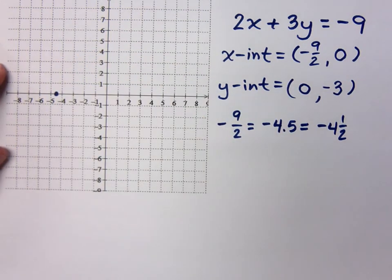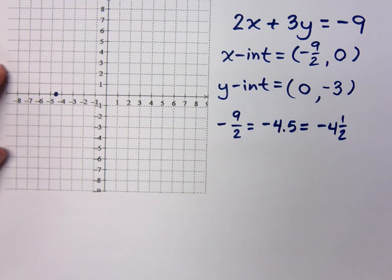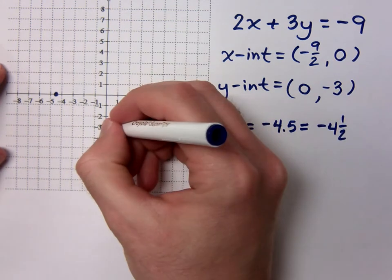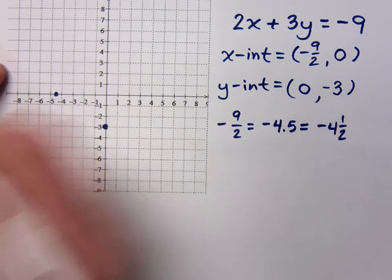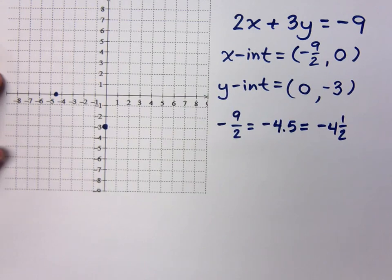What about your y-intercept? Where does every y-intercept go? On the y-axis, and don't you forget it. So 0, negative 3. It's going to be right there. Is this enough for me to draw my line? Right.